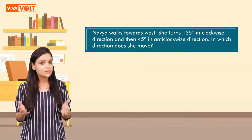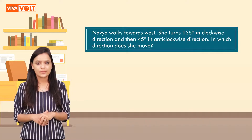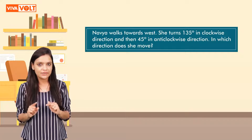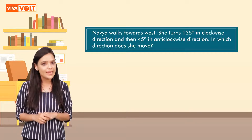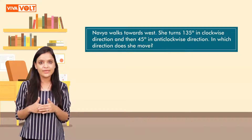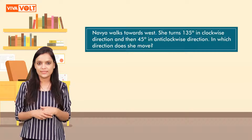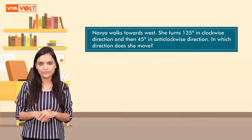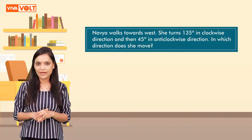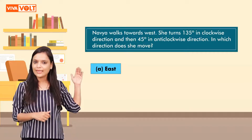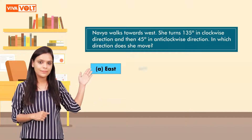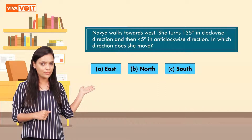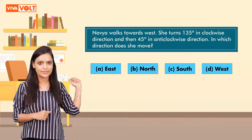Navya walks towards west. She turns 135 degrees in the clockwise direction and then 45 degrees in the anti-clockwise direction. In which direction does she move? Options are: A. East, B. North, C. South, D. West.